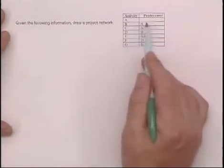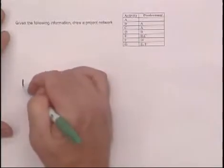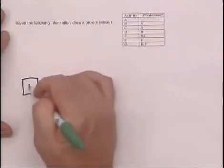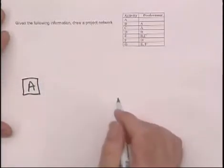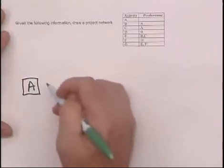And the first activity is the one without any predecessors, which is A. Draw a box there and put an A in it.